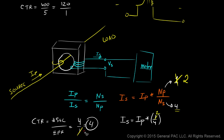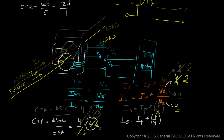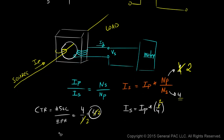So the primary turns value in the equation becomes 2. CTR is the value that is proportional to the number of secondary turns divided by the number of primary turns, and it is what relates secondary current to primary current.